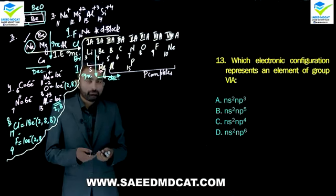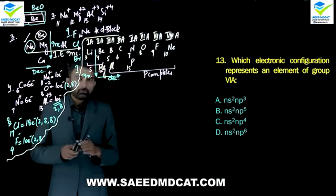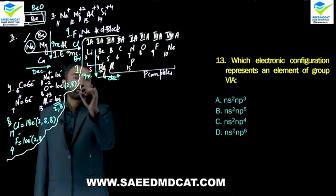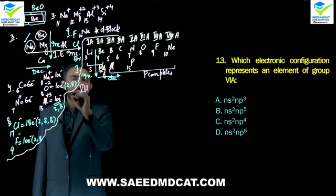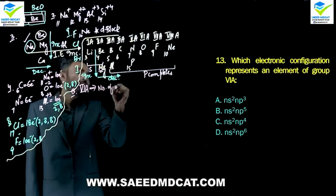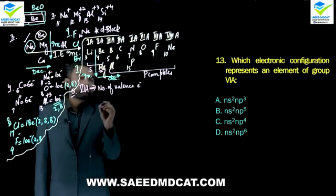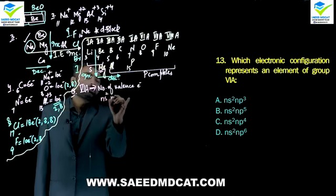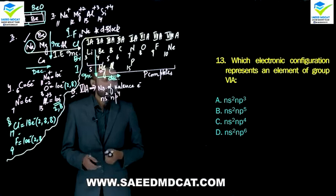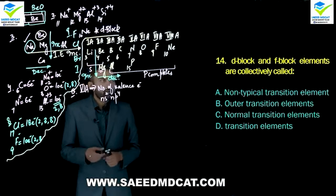Question 13: Which electronic configuration represents an element of group 6A? Group number shows the number of valence electrons. For group 6A, there should be 6 valence electrons: ns2 in the s subshell and np4 in the p subshell (2+4=6). So the correct configuration is ns2 np4, as seen in oxygen. Charlie option.